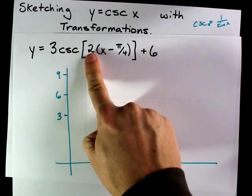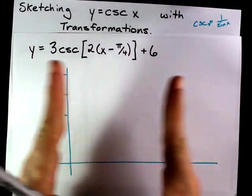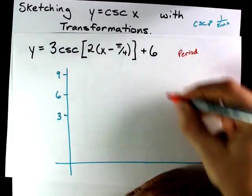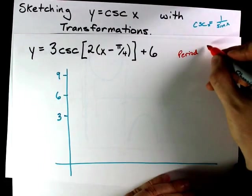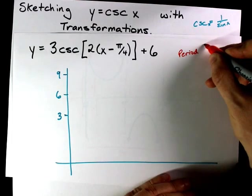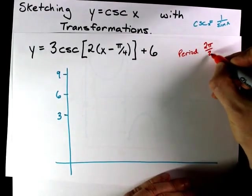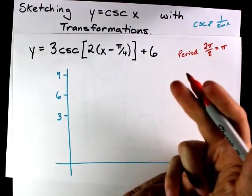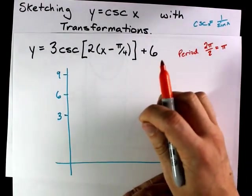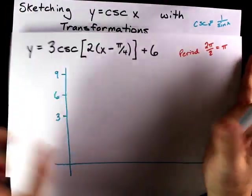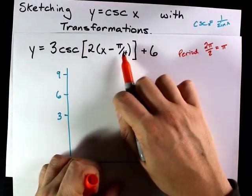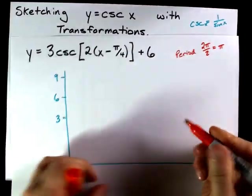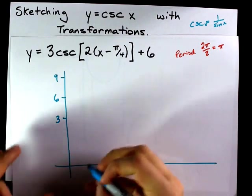This represents a horizontal compression by a factor of a half. That means the period of this new transformed cosecant is going to be half of 2 pi. That's 2 pi over k, which is just pi. And more importantly, that first vertical asymptote is not going to be at x equals 0. It is going to be at x equals pi over 4, because there is a shift right of pi over 4.